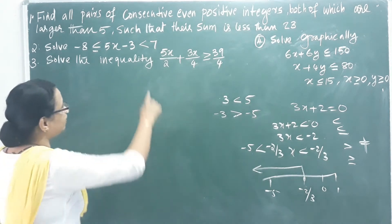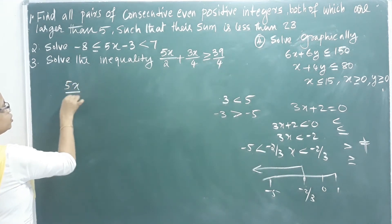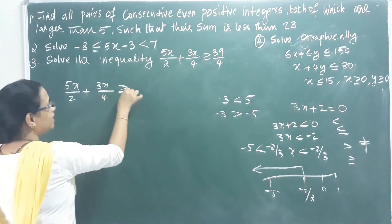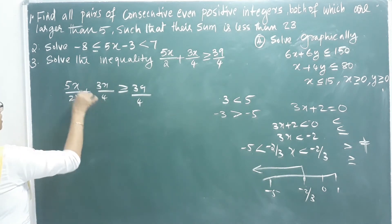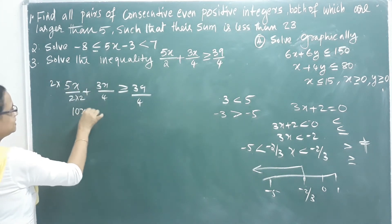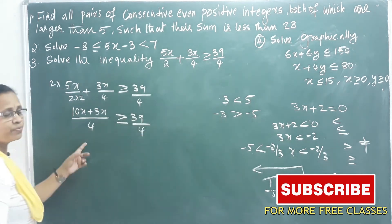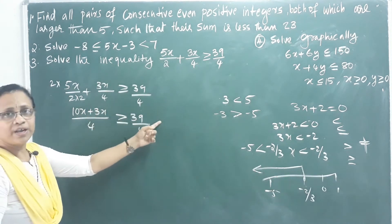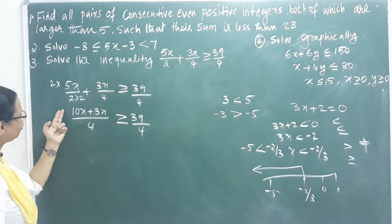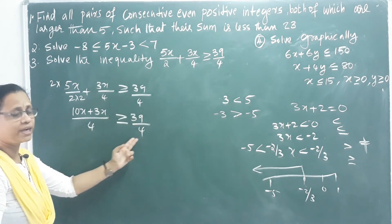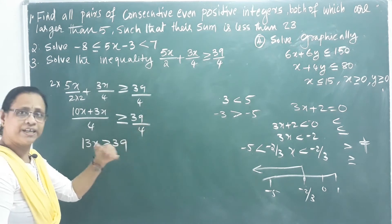Now, solve the inequality: 5x by 2 plus 3x by 4 greater than or equal to 39 by 4. I will make the denominators the same. Converting to a common denominator of 4: 10x plus 3x by 4 is greater than or equal to 39 by 4. Multiplying both sides by 4 gives 13x greater than or equal to 39.